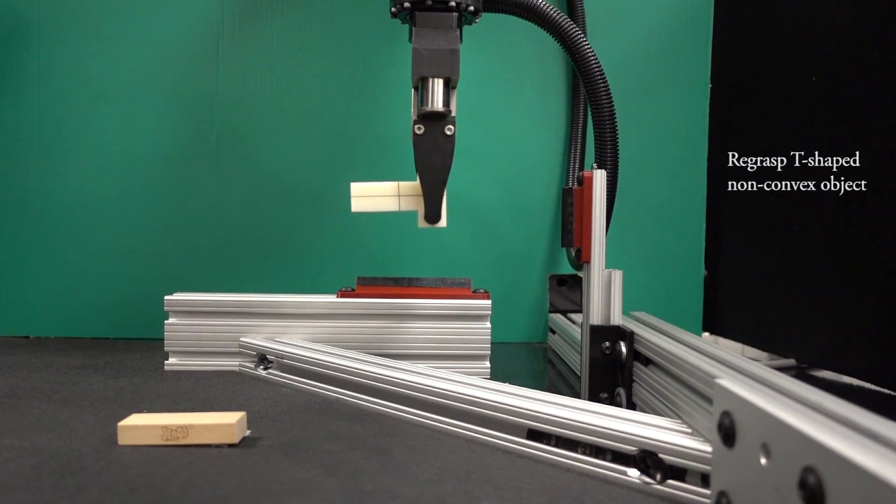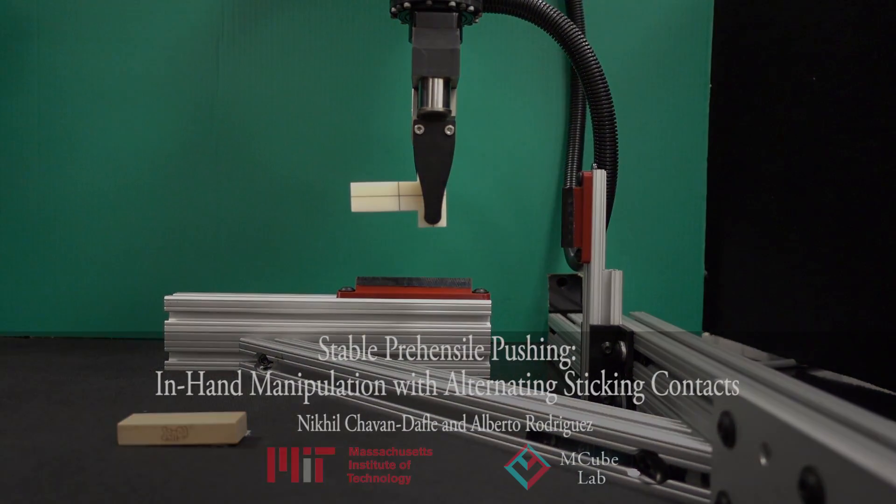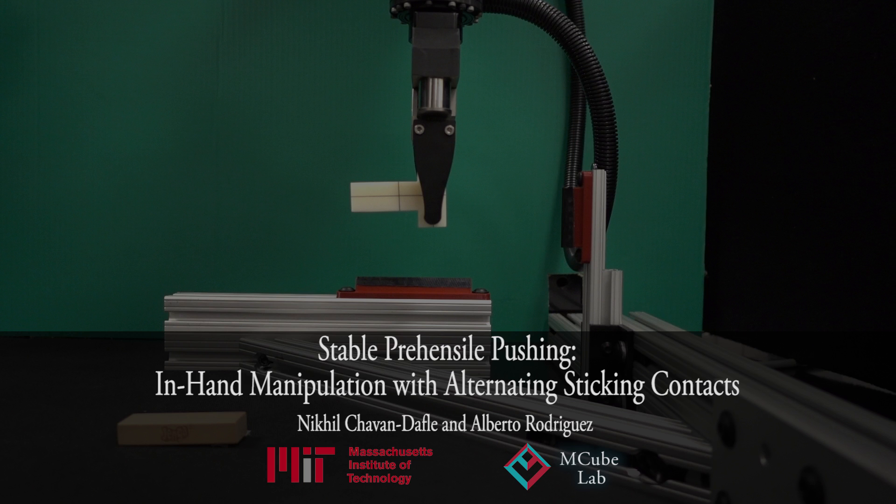With such capability of using the environment to manipulate objects in hand, simple robots with simple grippers will be able to do in-hand manipulations.